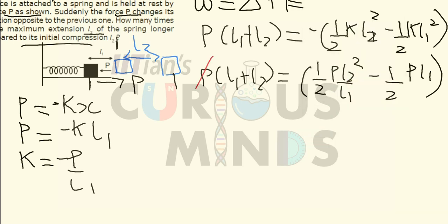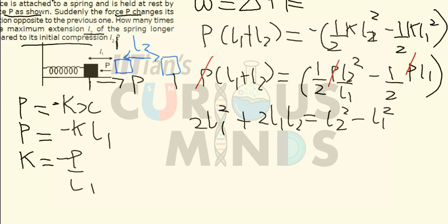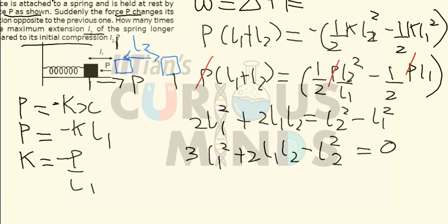The factor of P cancels out. Shifting terms and multiplying the whole equation by l1 gives: 2l1 squared plus 2l1 l2 equals l2 squared minus l1 squared. Rearranging: 3l1 squared plus 2l1 l2 minus l2 squared equals zero.